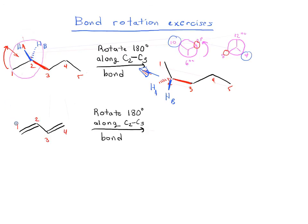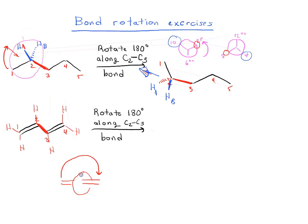Now let's look at the bottom example — rotating along the C2-C3 bond. Here we don't have any tetrahedral carbons; this is a completely flat molecule. Think of this as a hinge: the C2-C3 bond is our axis, and we're going to rotate the alkene around it. Carbon 1 can freely rotate around C2-C3 — remember it can't rotate along C1-C2 or C3-C4, but it can rotate around C2-C3. If we look at this edge-on and rotate 180 degrees, both alkenes end up in the same plane.